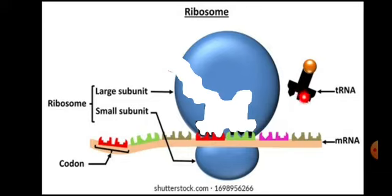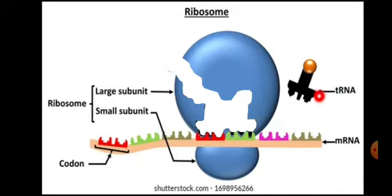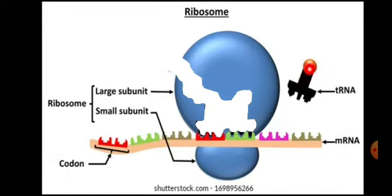There are 61 different types of anticodons, meaning 61 different types of tRNA, responsible for carrying 20 different types of amino acids. Three types of anticodons are not responsible for carrying any amino acid. These tRNA molecules are present in the cytoplasm in thousands.